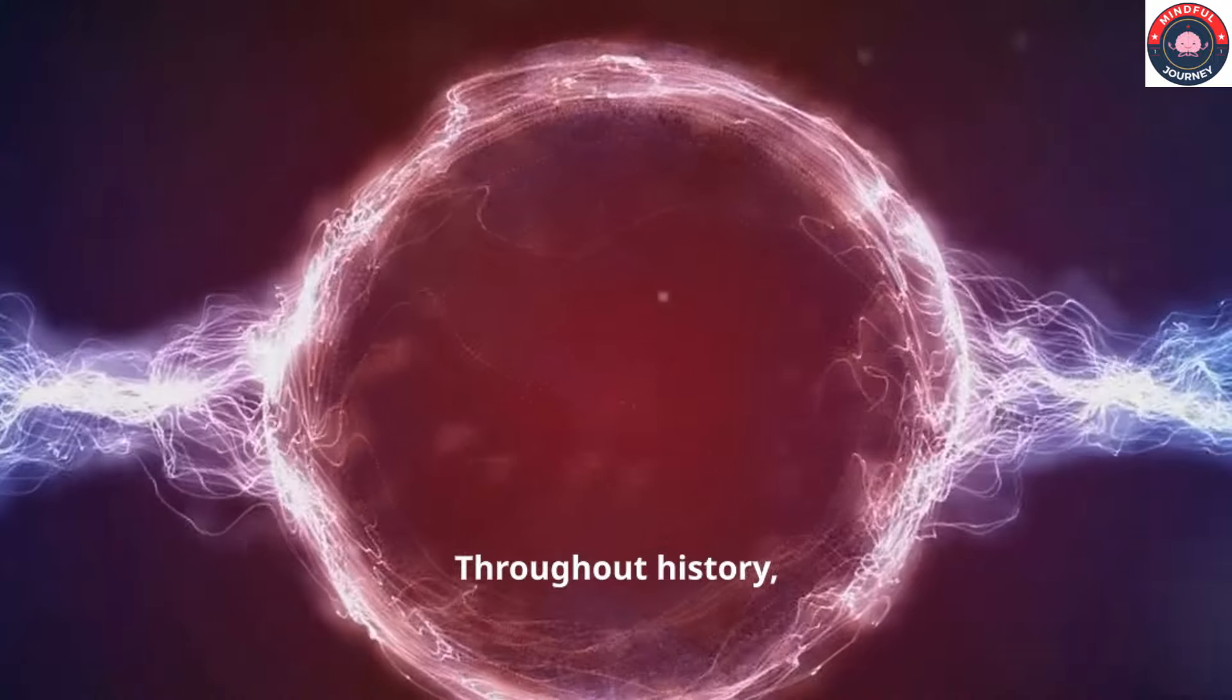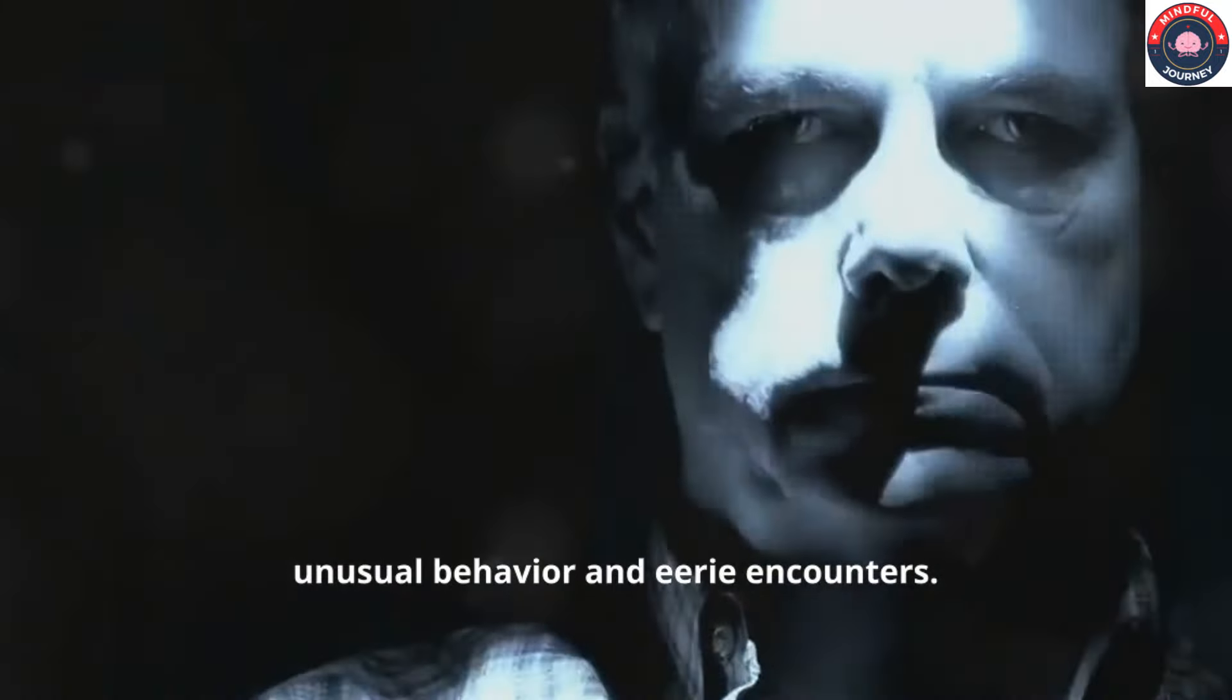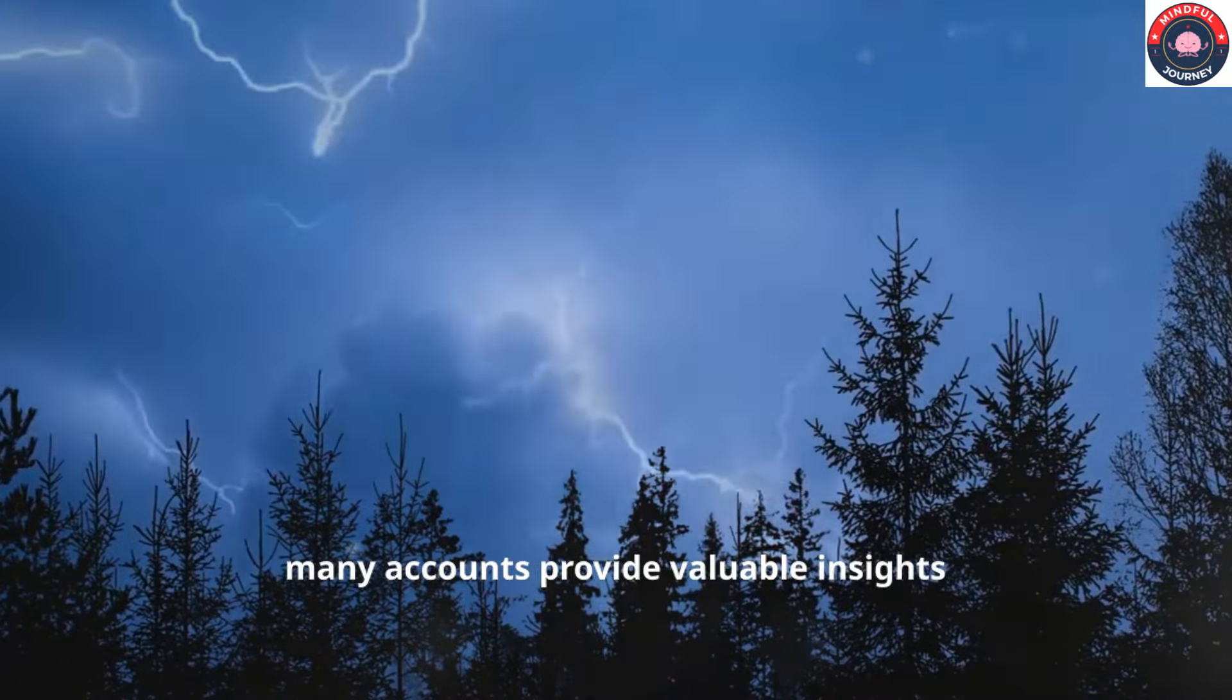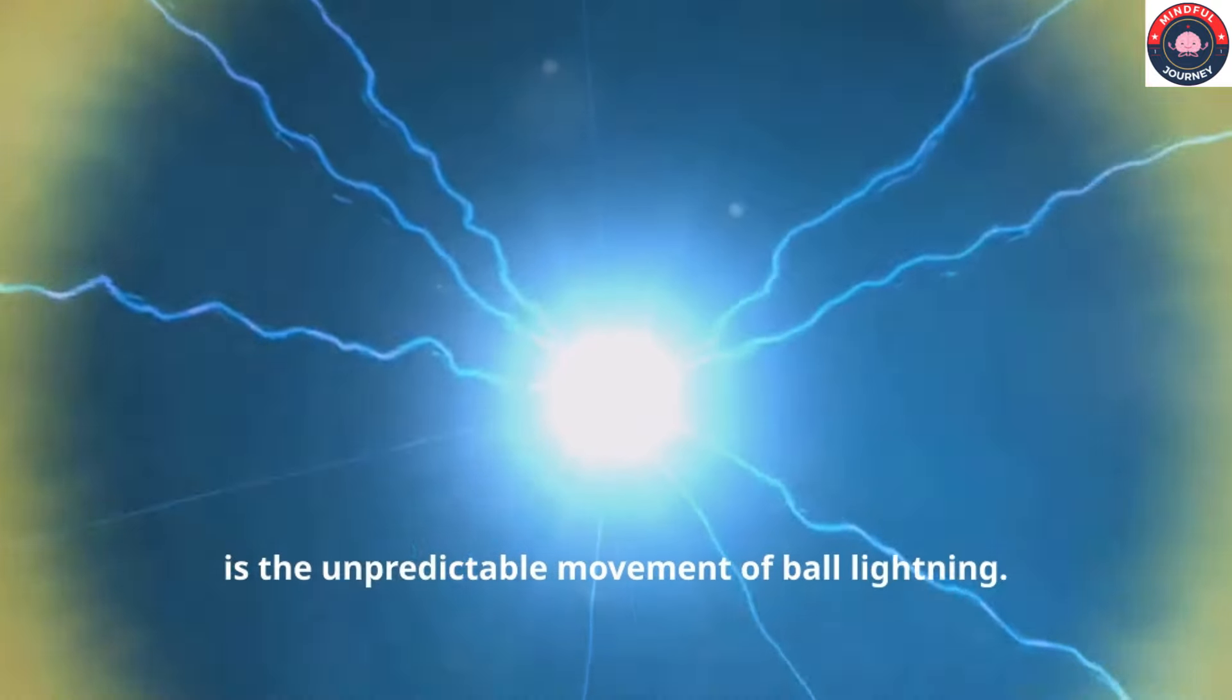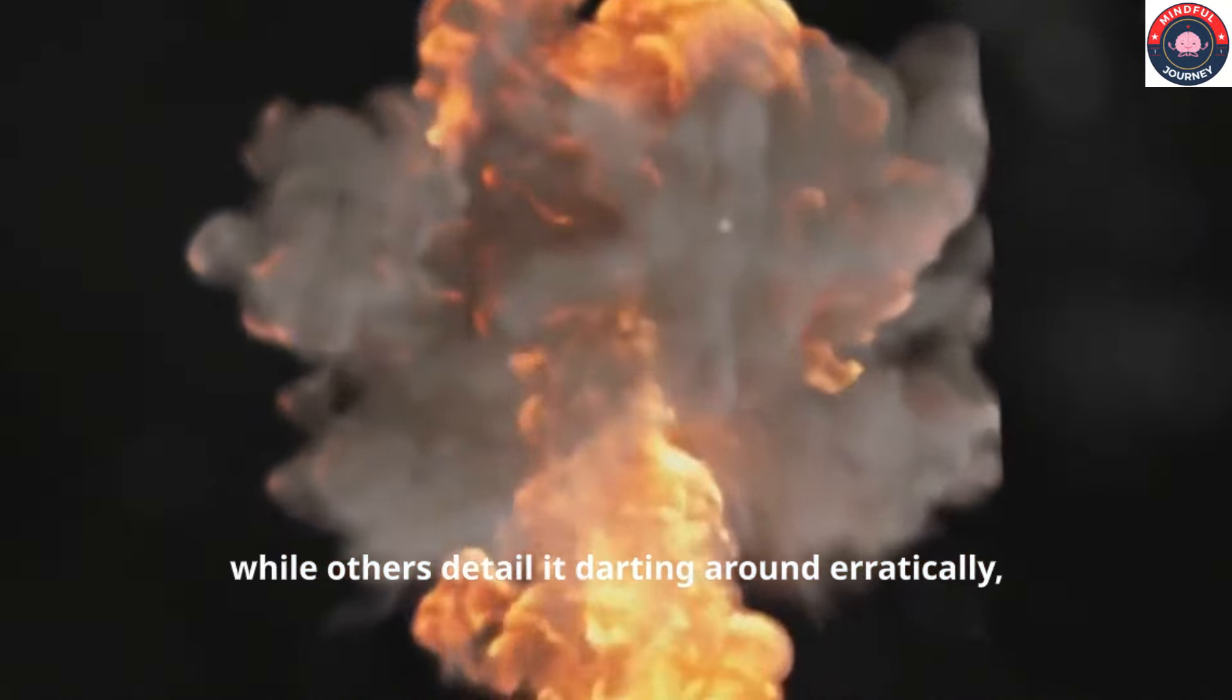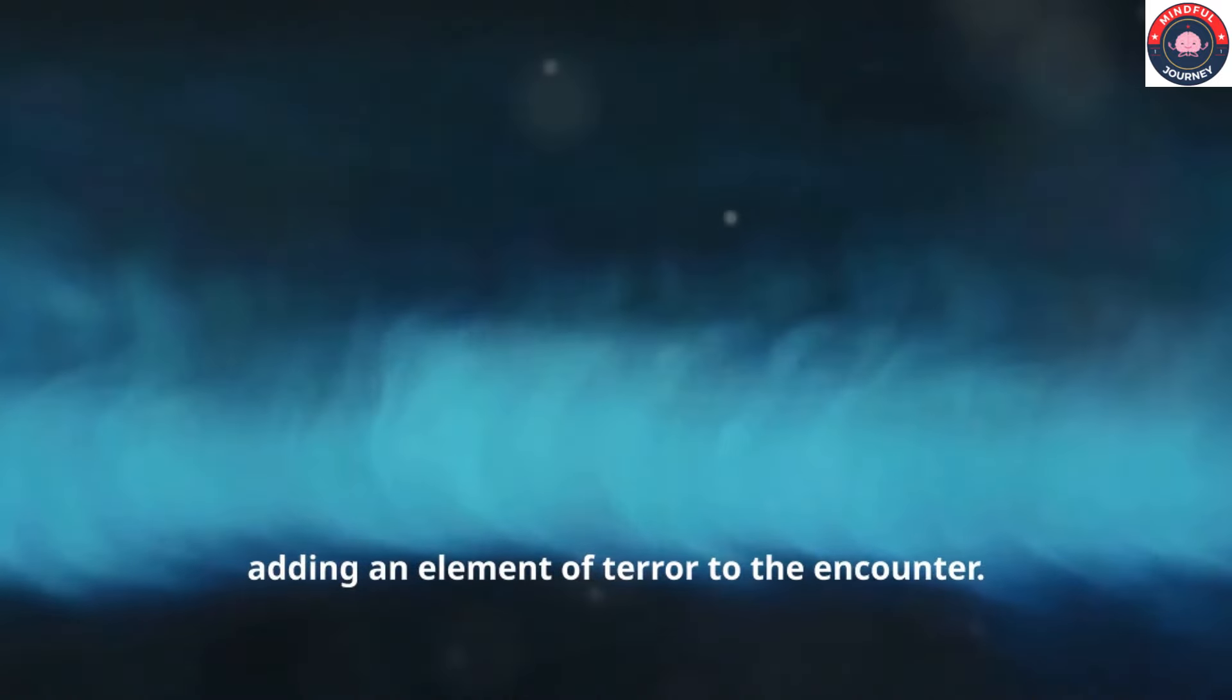Throughout history, there have been countless reports of ball lightning sightings. These eyewitness accounts often describe unusual behavior and eerie encounters. While some reports may be exaggerated or misinterpretations of other phenomena, many accounts provide valuable insights into the nature of ball lightning. One recurring theme in witness accounts is the unpredictable movement of ball lightning. Some reports describe it floating gently through the air, while others detail it darting around erratically, as if possessing a mind of its own. There are even accounts of ball lightning seemingly chasing people, adding an element of terror to the encounter.